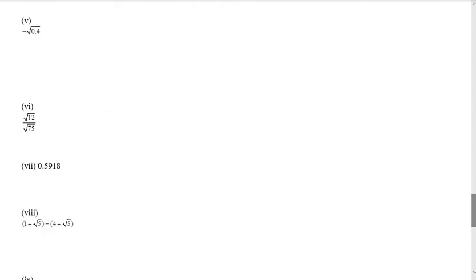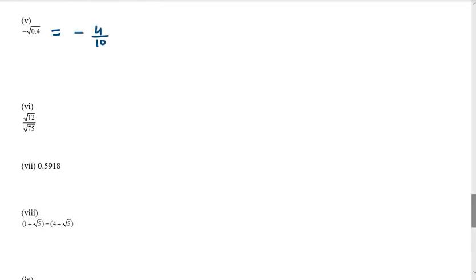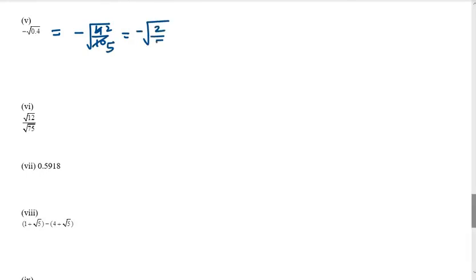The 5th part is −√0.4. We can define 0.4 as 4/10, so we have √(4/10). Simplifying, we can write it as √(2/5). There is no further simplification, so this is a rational number.